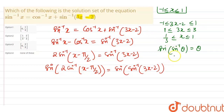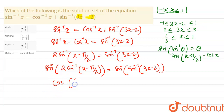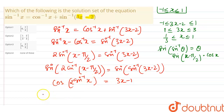We also use the identity sin(θ - π/2) = -cos(θ). So the left side becomes -cos(2·sin⁻¹x), which equals 3x - 2. Now cos(2·sin⁻¹x) can be written as 1 minus 2·sin²(sin⁻¹x), which equals 3x - 1.